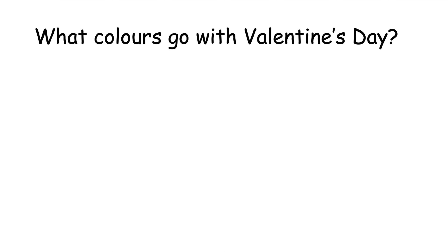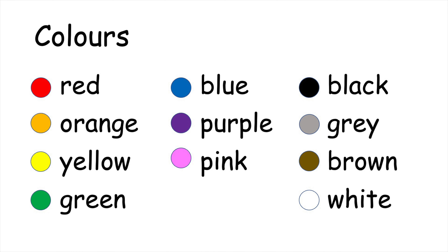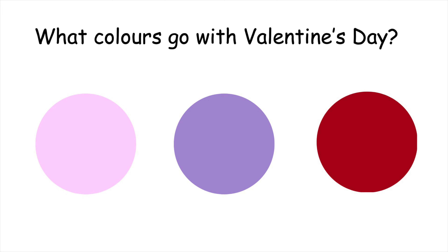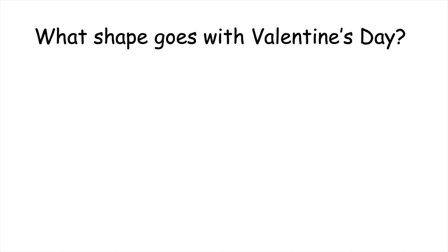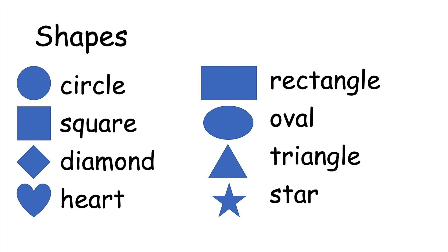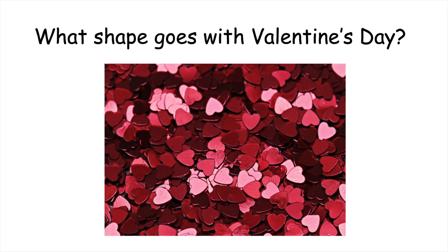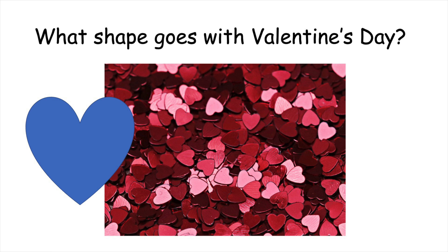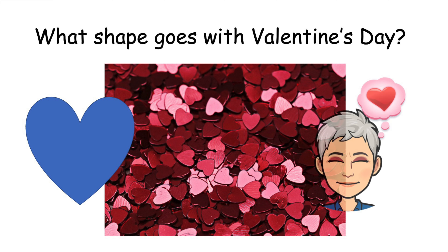Sometimes holidays have special colors. What colors go with Valentine's Day? Pink, purple, and red are the colors that often go with Valentine's Day. What shape goes with Valentine's Day? Any guesses? Here's a clue — hearts. Hearts are often associated with love, which is what we celebrate on Valentine's Day.